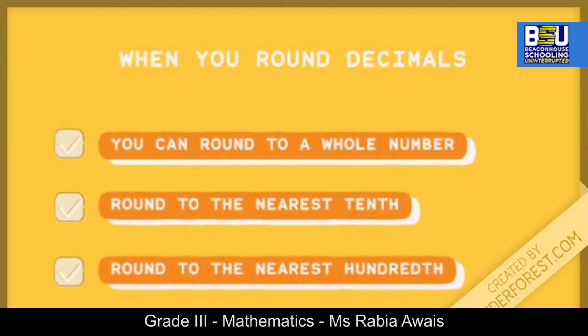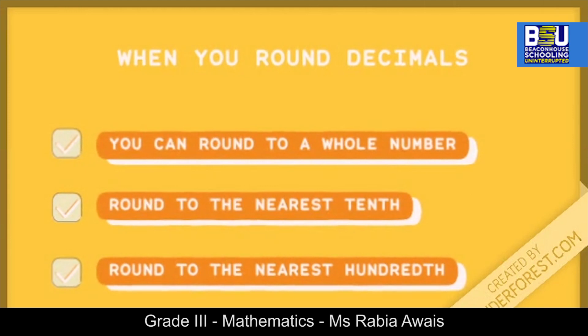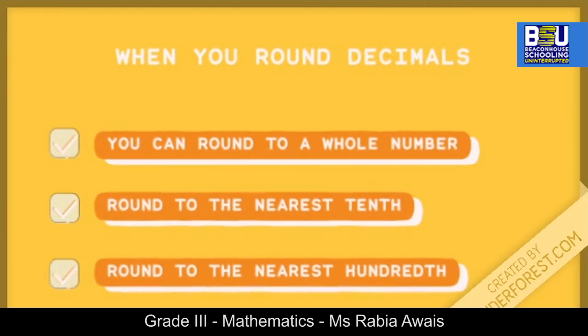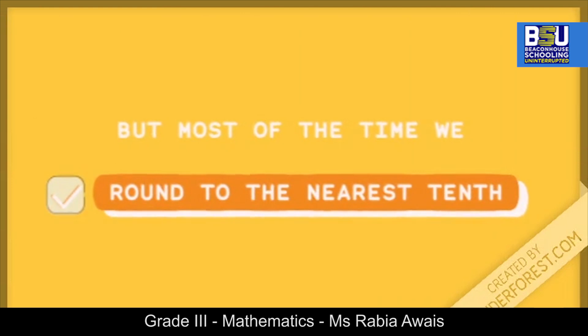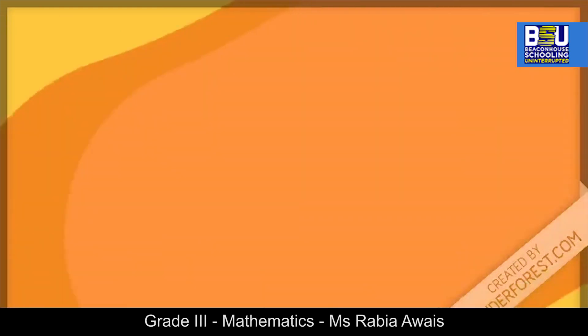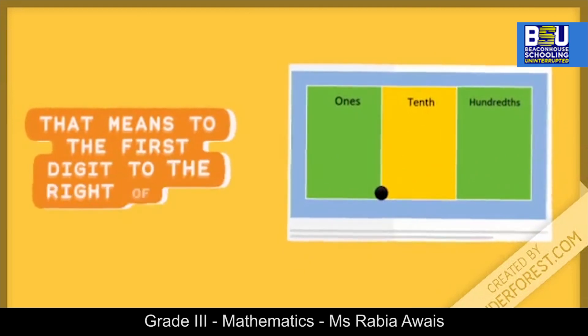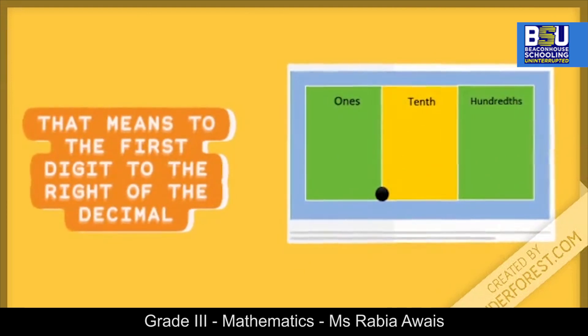When you round decimals, you can round to a whole number, round to the nearest tenth, or round to the nearest hundredth. But most of the time we round to the nearest tenth. That means to the first digit to the right of the decimal point.